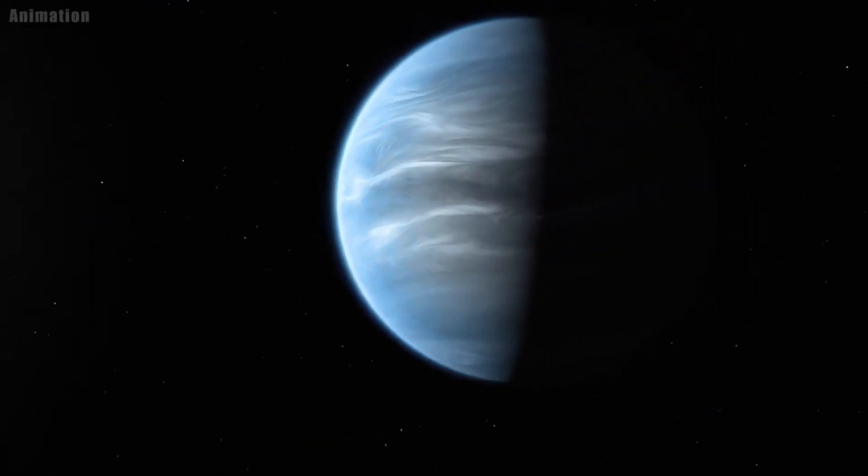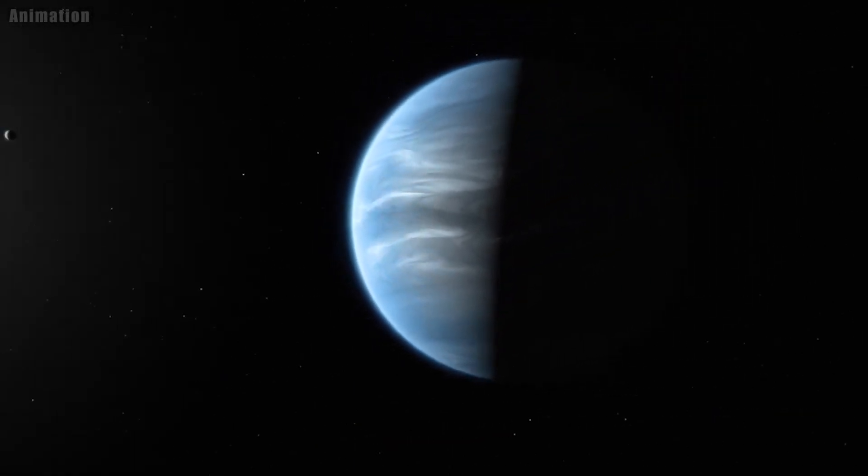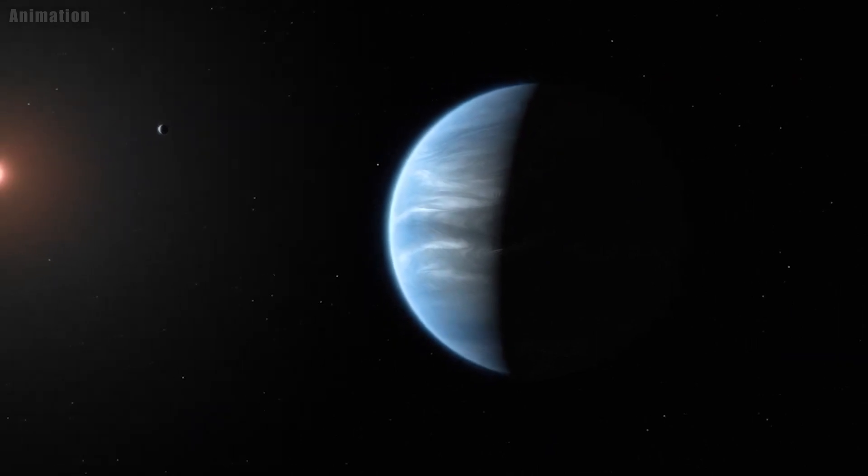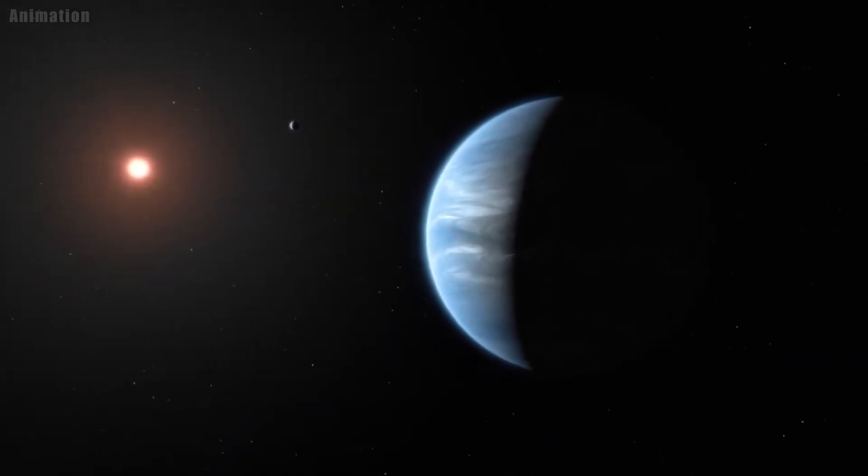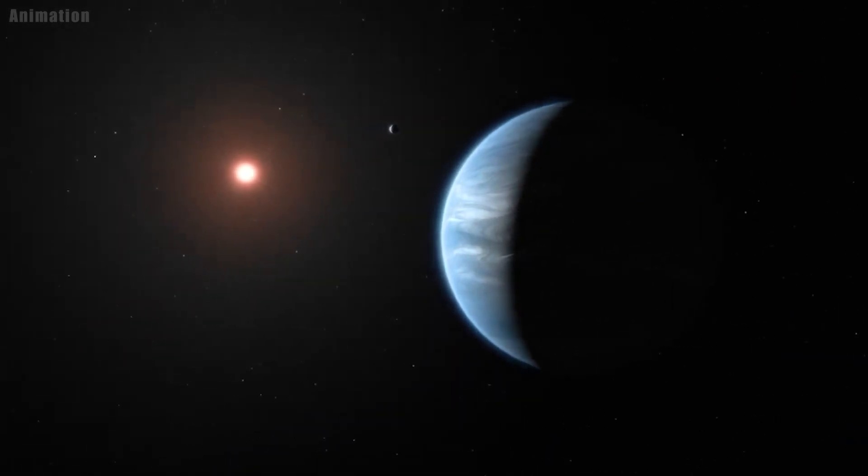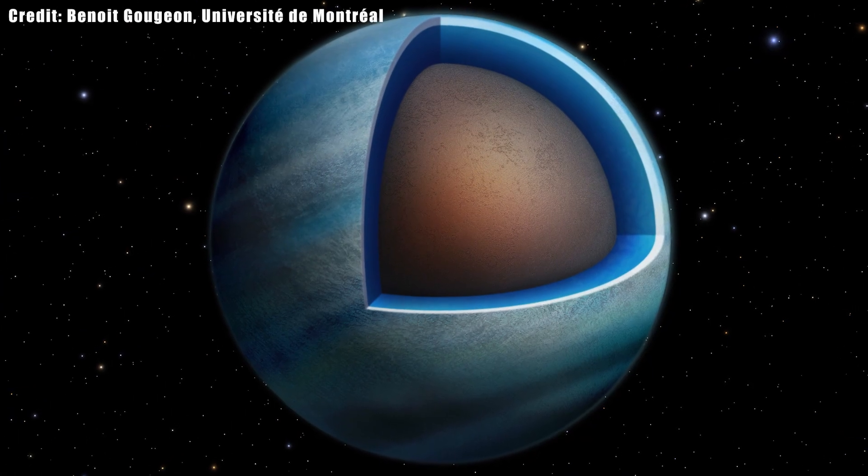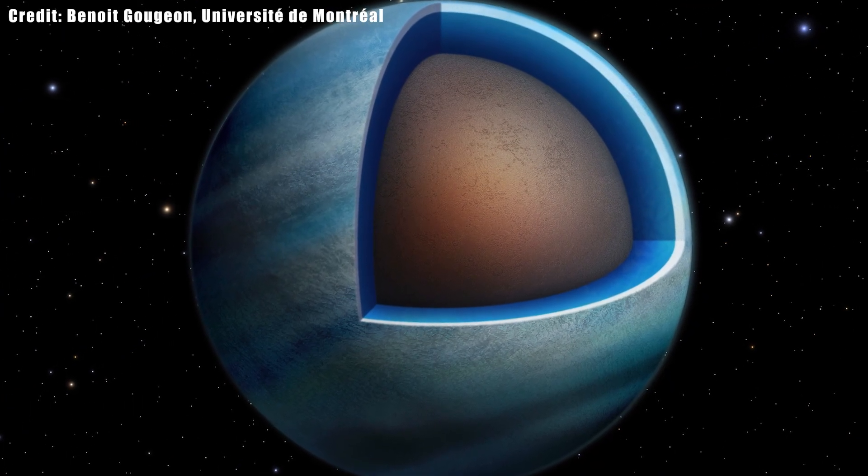Using data from NASA's Hubble and Spitzer Space Telescopes, astronomers have found evidence that two exoplanets orbiting a star 218 light-years away are water worlds, where water makes up a large fraction of the entire planet.